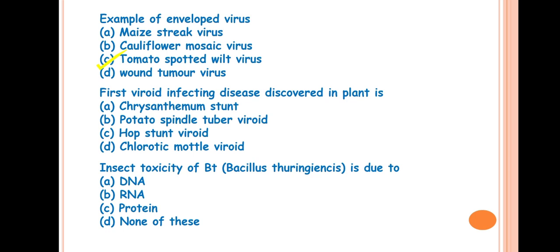The next is, first viroid infecting disease discovered in plant is? The answer is B, potato spindle tuber viroid. This viroid disease is first discovered by T.O. Diener in 1971. Viroids are the smallest infectious pathogen known. This is lesser size than the virus also. So, the smallest organism which is causing disease is the viroid. It is composed of a short strand of circular single-stranded RNA. So, small circular single-stranded RNA is there as genome of the viroid and it do not contain the protein code.